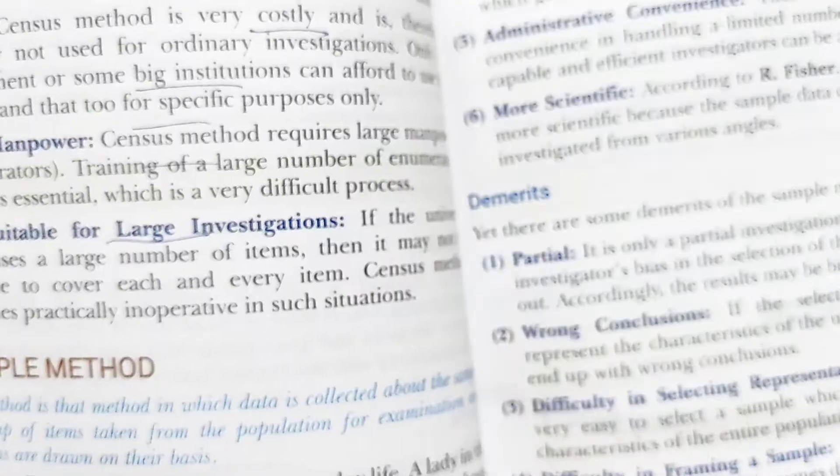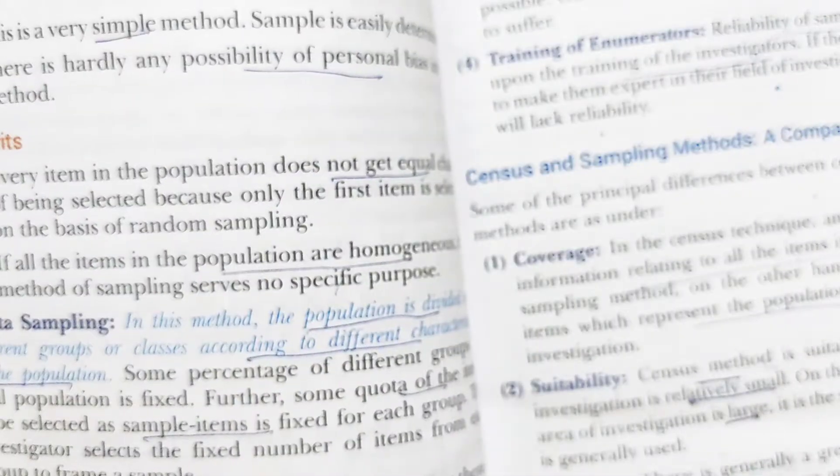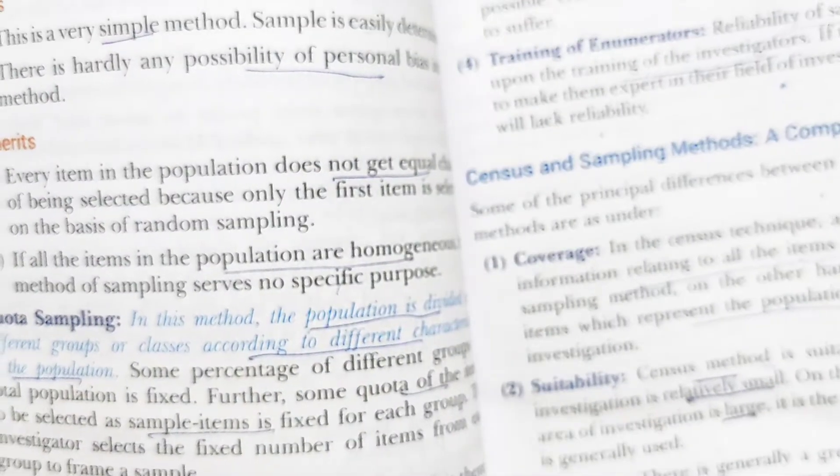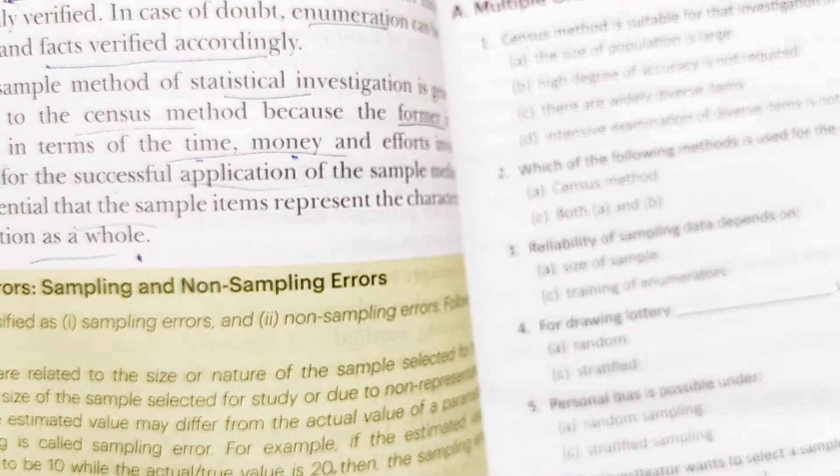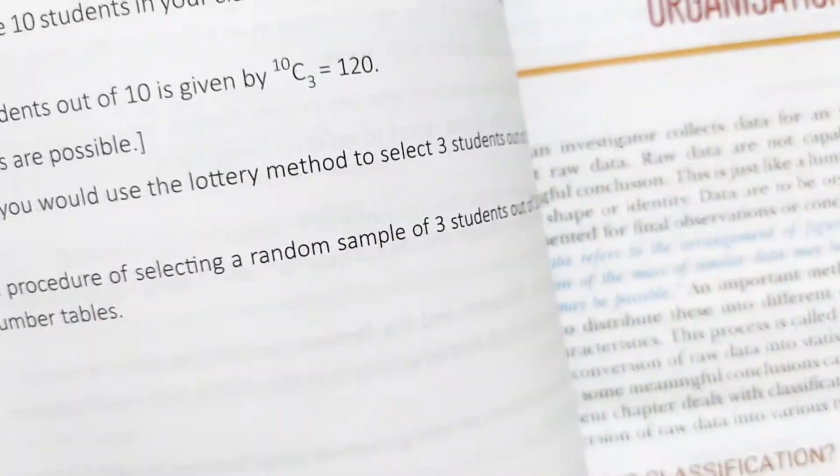After this, we are able to complete the chapter. We have discussed the census method, all the sampling methods, their comparison, and the factors related to their suitability for statistical investigation.